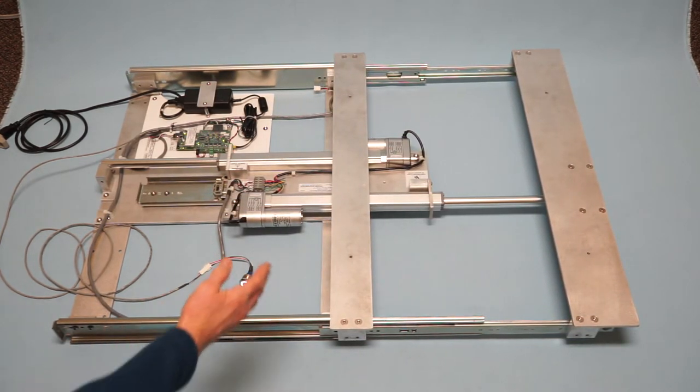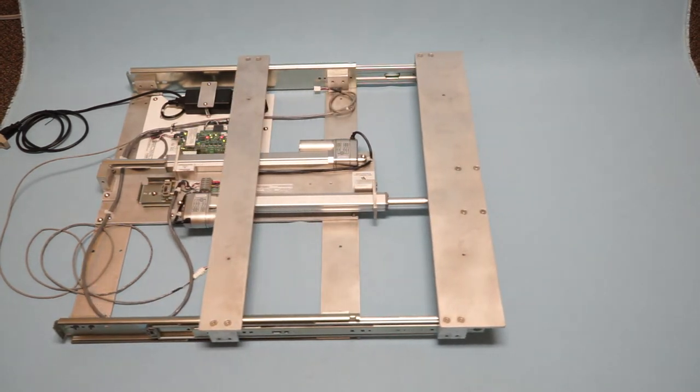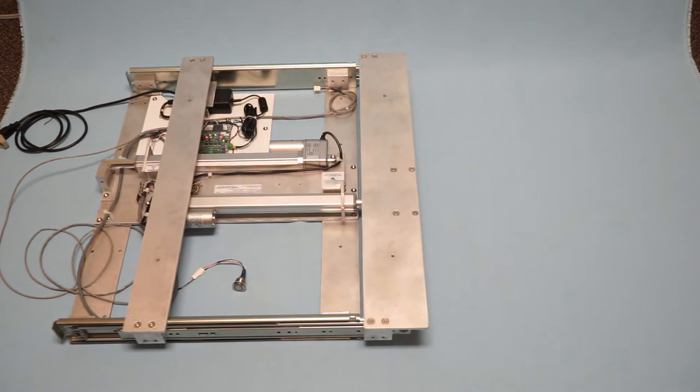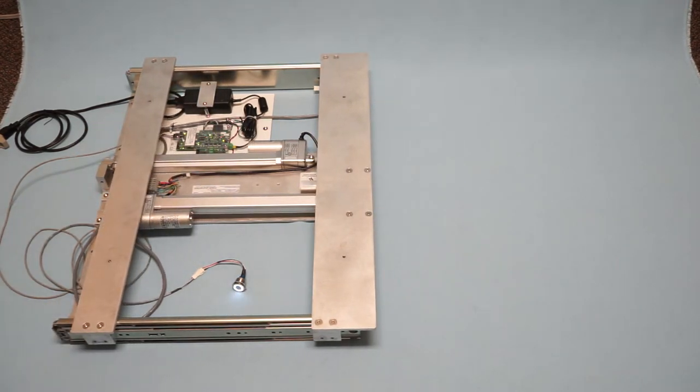Mounting the cooktops on drawers saves space. Motorizing them makes it easy for salespeople to demonstrate. A microprocessor controls the linear actuators with adjustable speed and distance.